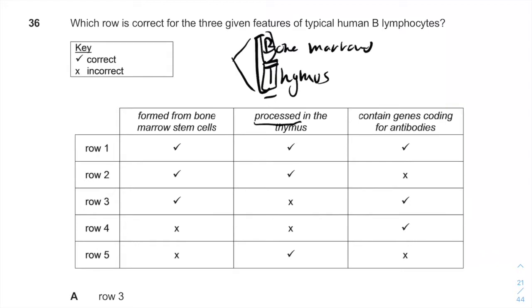So B cells aren't being processed in the thymus, so we can just remove all of the different rows that have checkmarks in them, and we already remove three options.